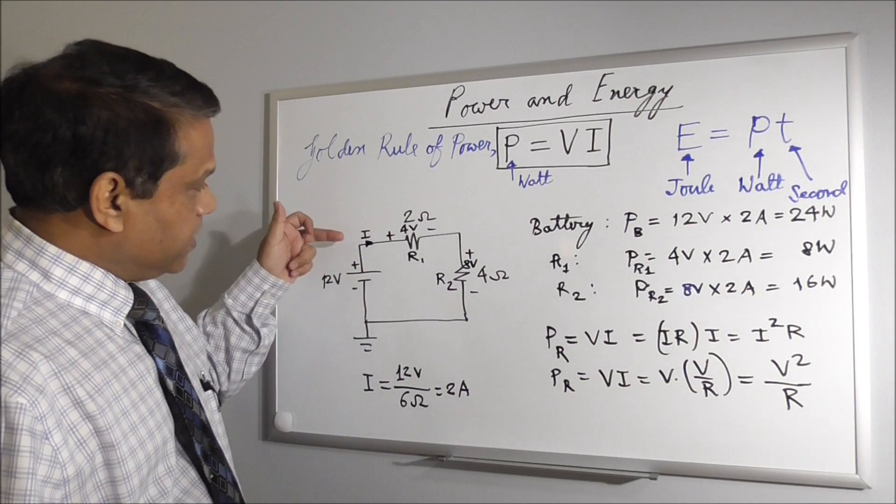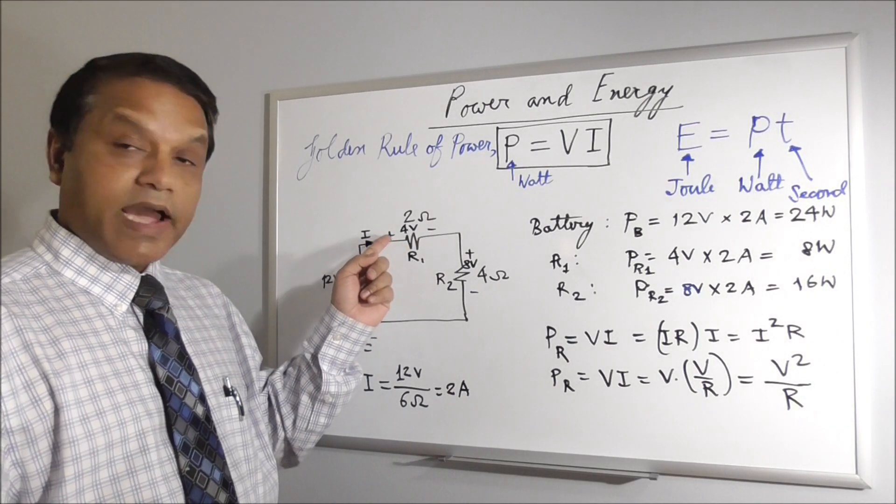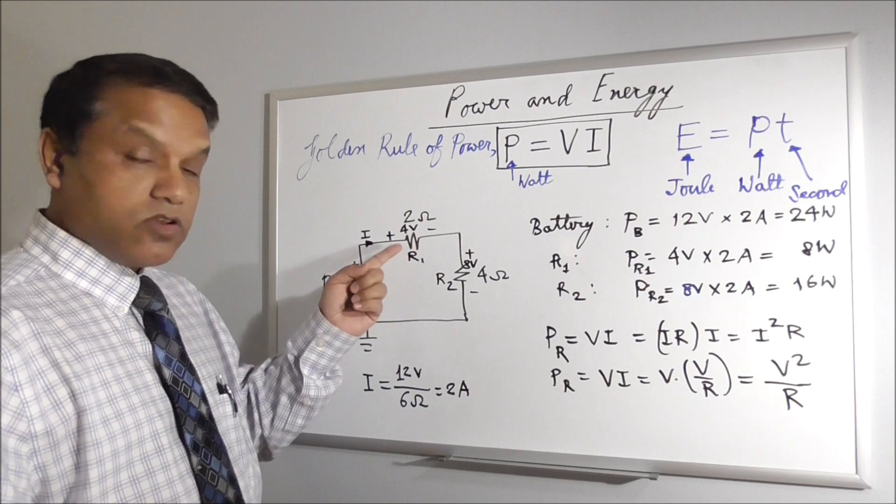And here, current is going into the positive terminal, positive, higher voltage side of the resistor. So it is consuming power.